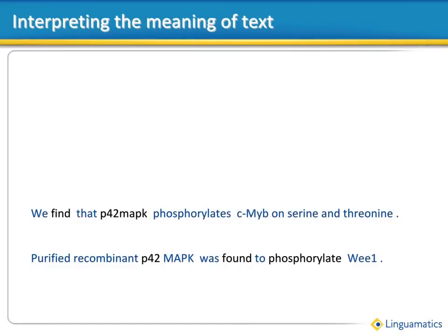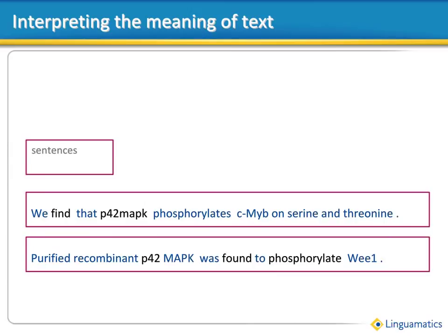To understand how text mining systems like I2E interpret the meaning of text, let's take the example of these two pieces of text below. First of all, the I2E software recognises that these two pieces of text are sentences. This alone can be very valuable, especially if you're looking for associations or connections between things. If you did a standard keyword search looking anywhere in a document, the chances of the two things being associated can be quite small. It introduces a lot of noise in the results and you have to read through every document before knowing which ones contain anything relevant. If they co-occur in the same sentence together, there's a much greater likelihood that there is an actual association between the two things.